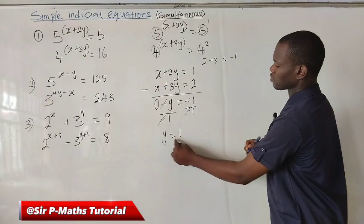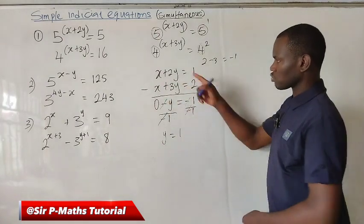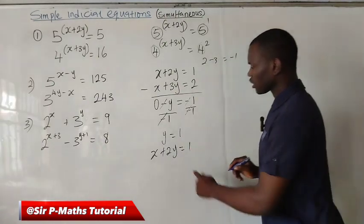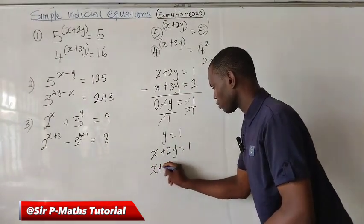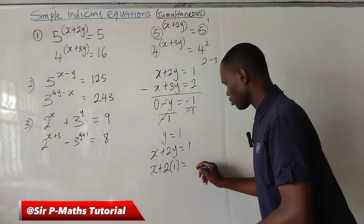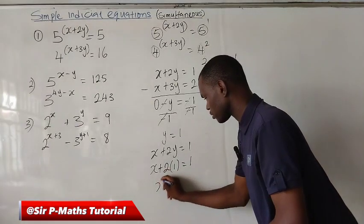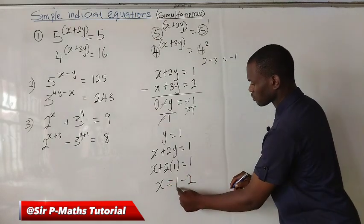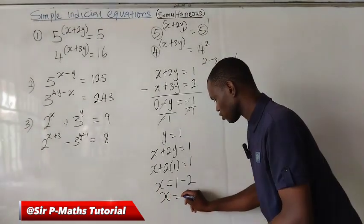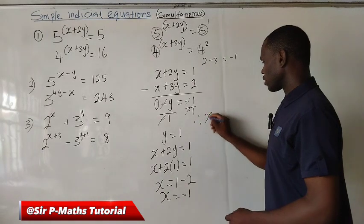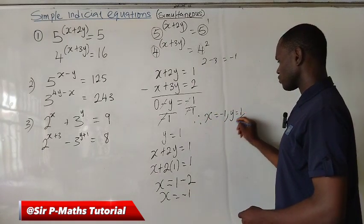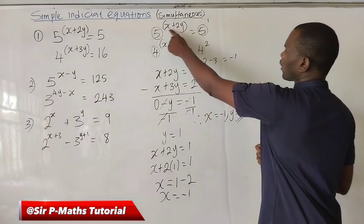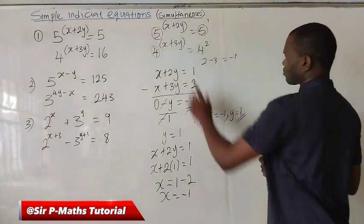Having gotten y as 1, substitute 1 into any of the equations to get x. Using equation 1: x plus 2y equals 1. Anywhere you see y, put 1. So x plus 2 times 1 equals 1. Move 2 over: x equals 1 minus 2, which gives x equals minus 1. Therefore when x is equal to minus 1 and y is positive 1, this is the solution of the equation. If you put minus 1 and 1 for x and y, you get 5 after simplifying — you can try it.